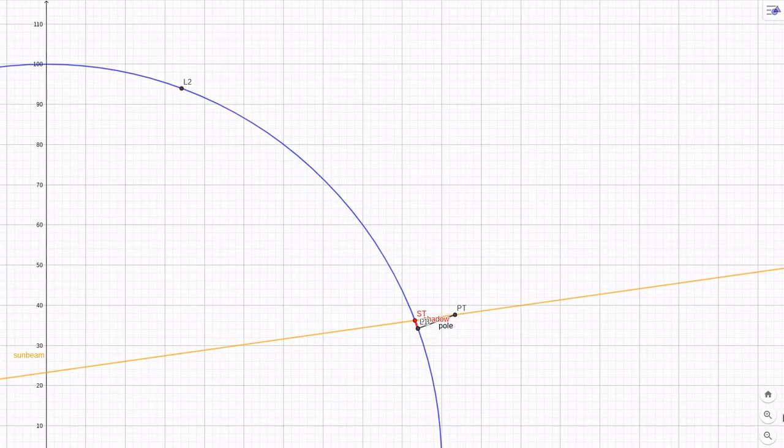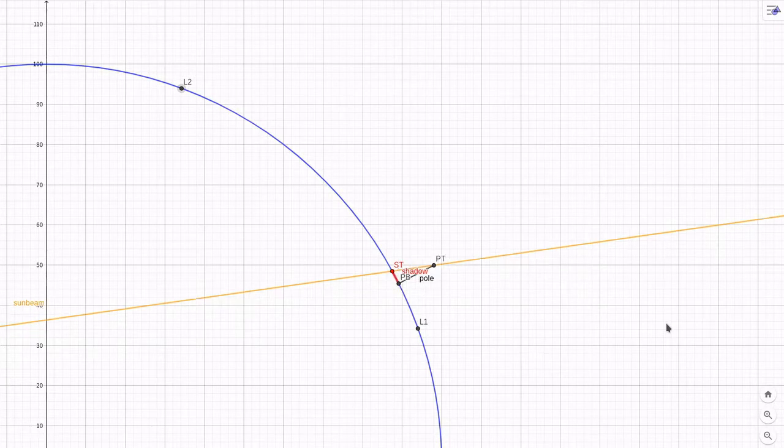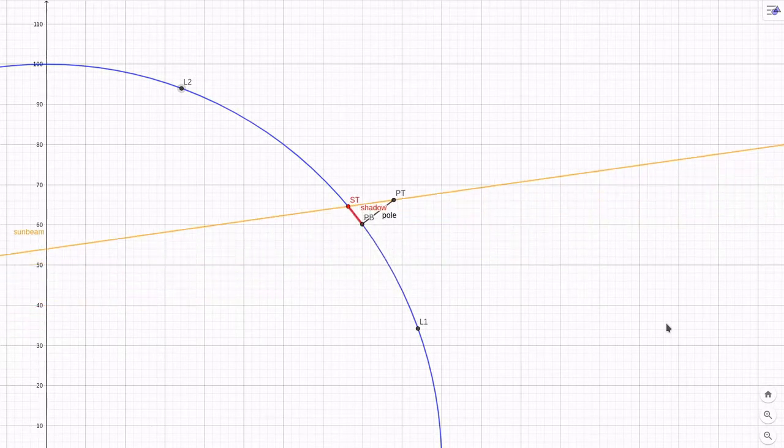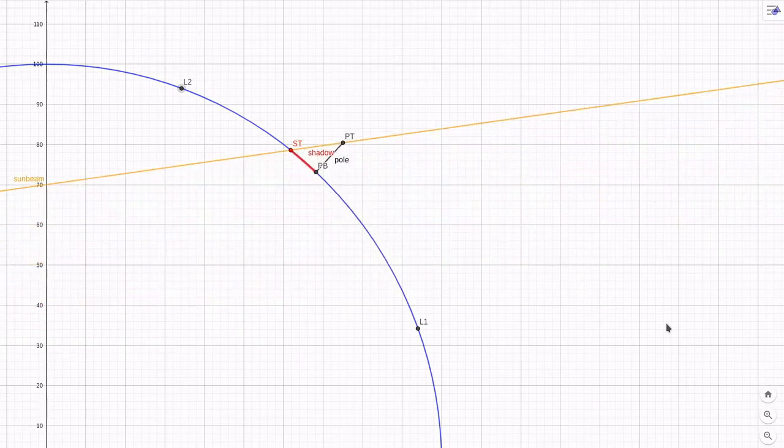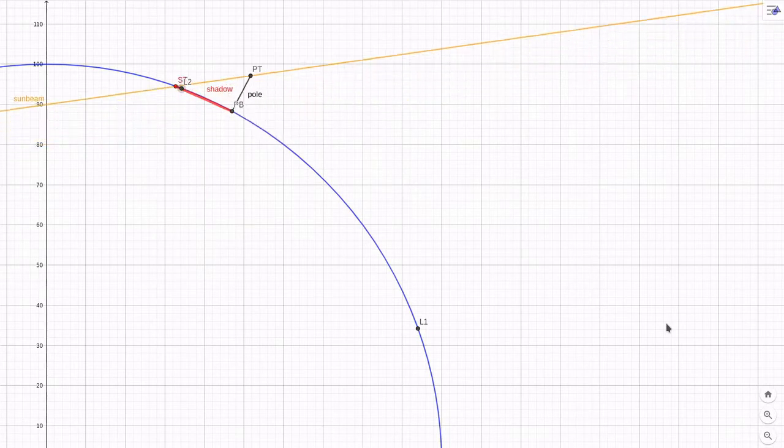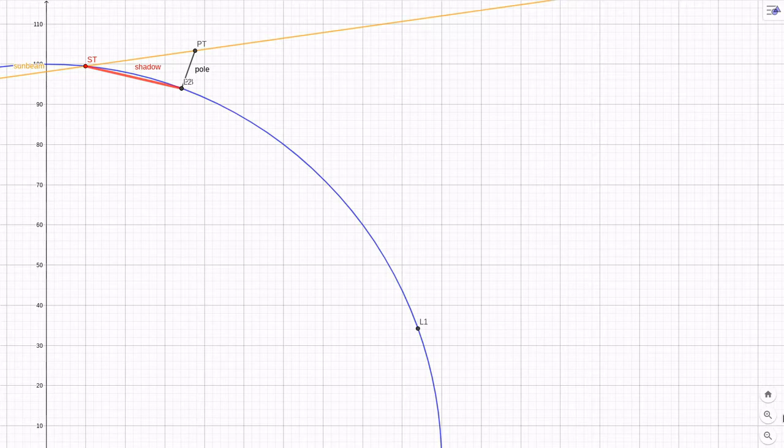Anyone who has ever googled how to measure the Earth's circumference or looked for it here on YouTube is familiar with the famous experiment of Eratosthenes, who calculated it from the different angles of elevation of the sun at noon in two different locations on the same meridian.